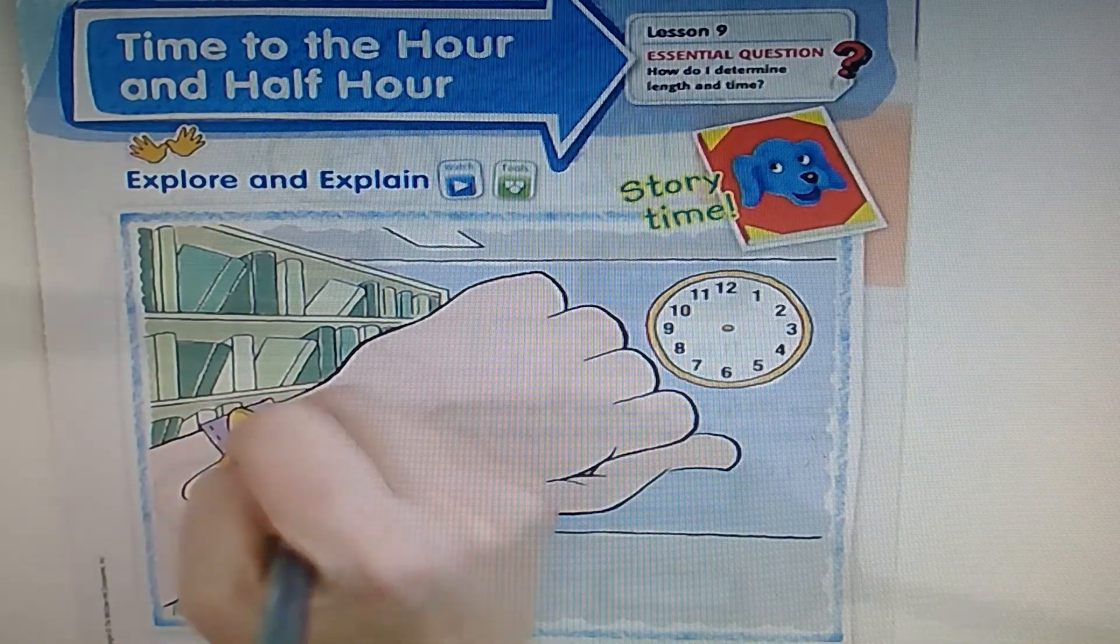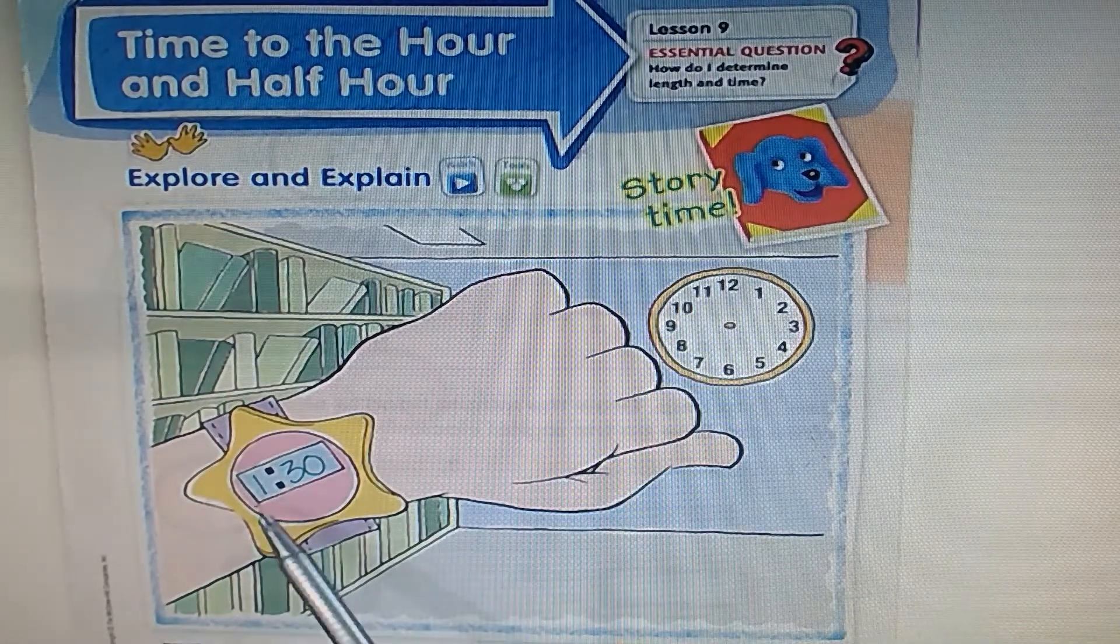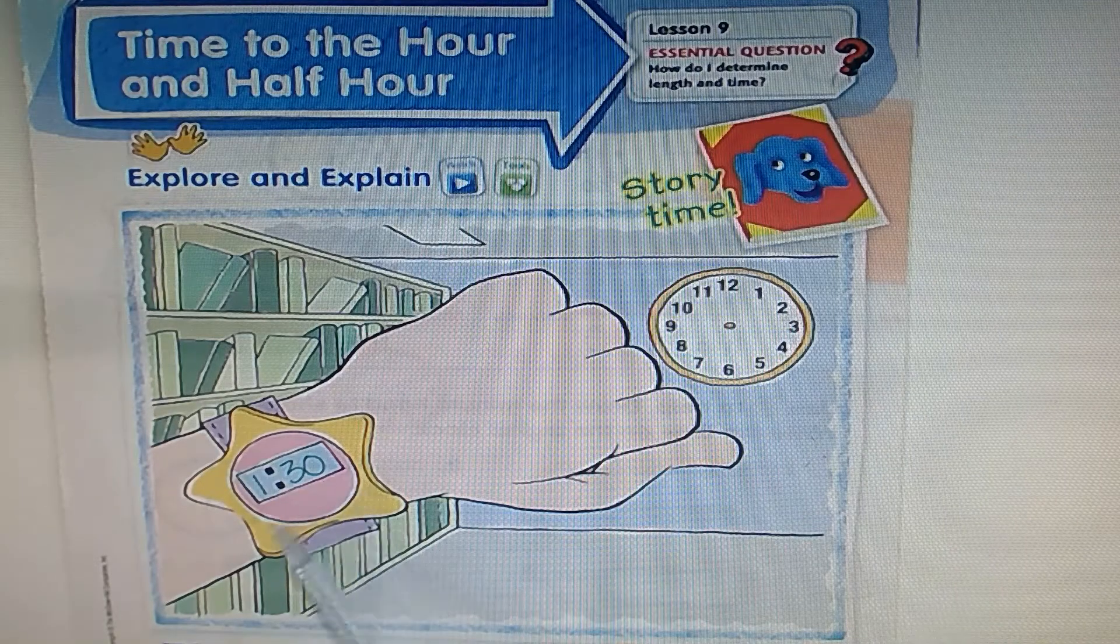1:30 looks like this on the digital clock. 1 is the hour, 30 are the minutes. 1:30.